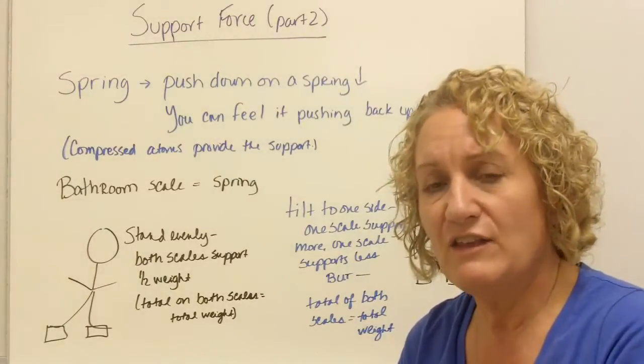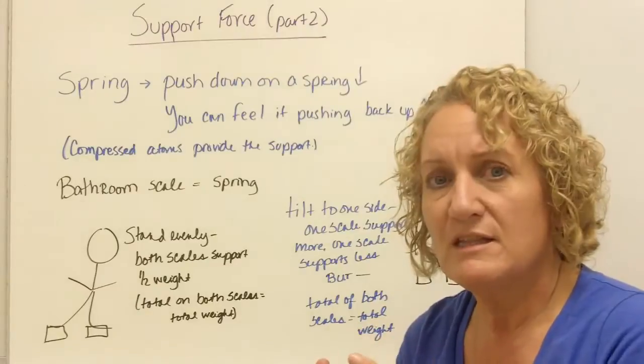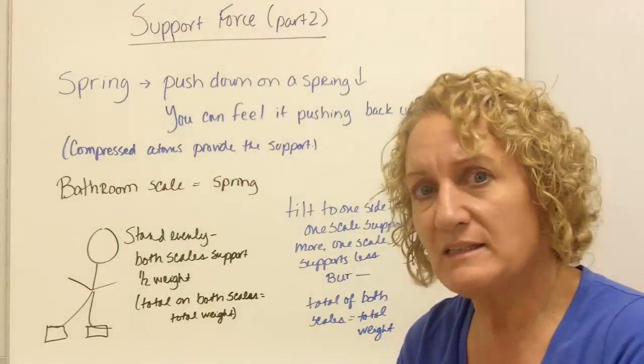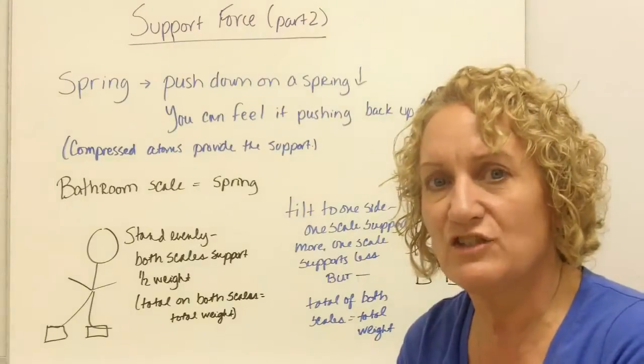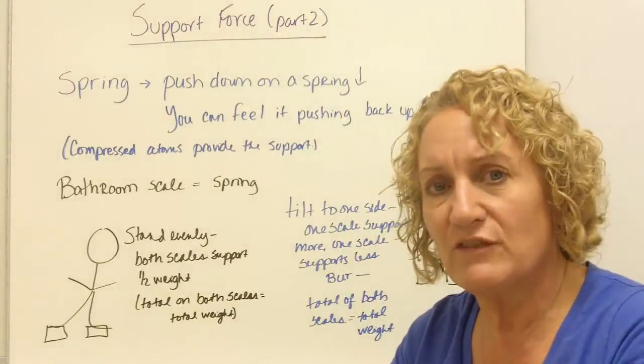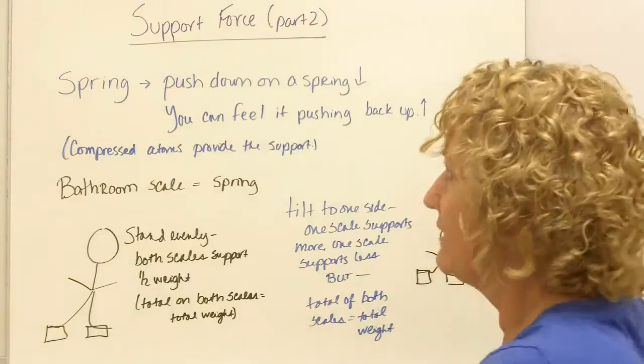Maybe it shows 75, and the other one might show 25, but the incredible thing is that when you add those back together, you're always going to get the same 100 that you started out with. That's not going to change. So it distributes differently, but the total is exactly the same.